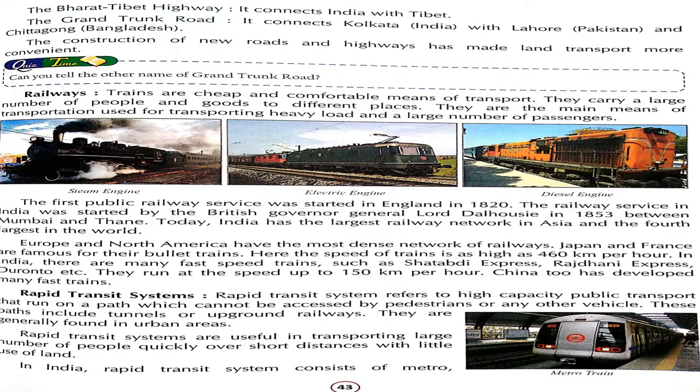Next is the topic of railways. Trains are a cheap and comfortable means of transport, which can also connect people to each other. As you can see on the screen, this is a steam engine. You can also see electric wiring — the electric wire is used to get current. And the other type is the diesel engine.